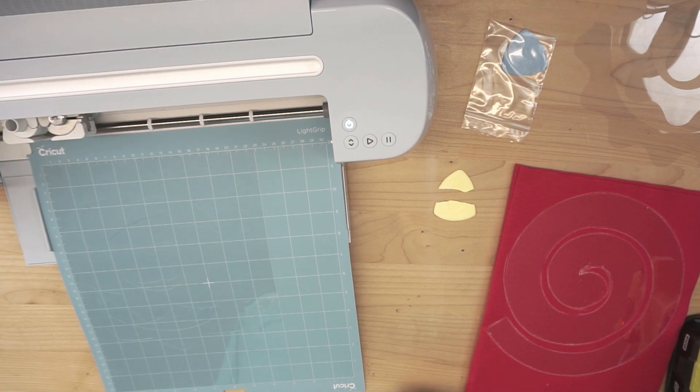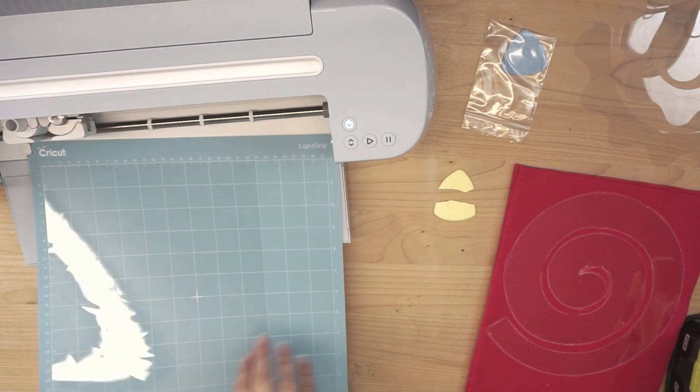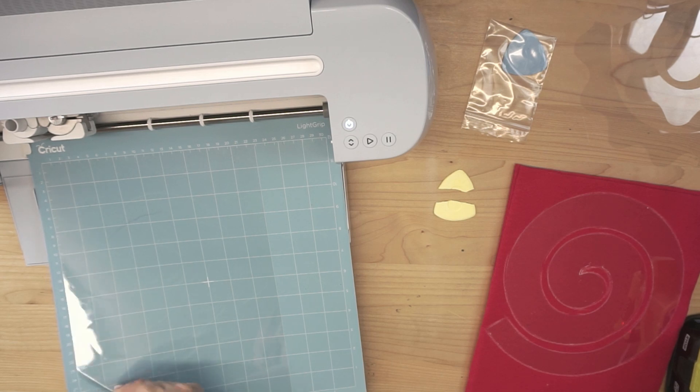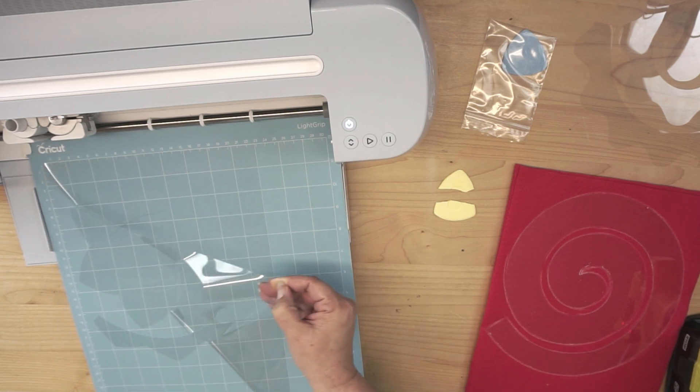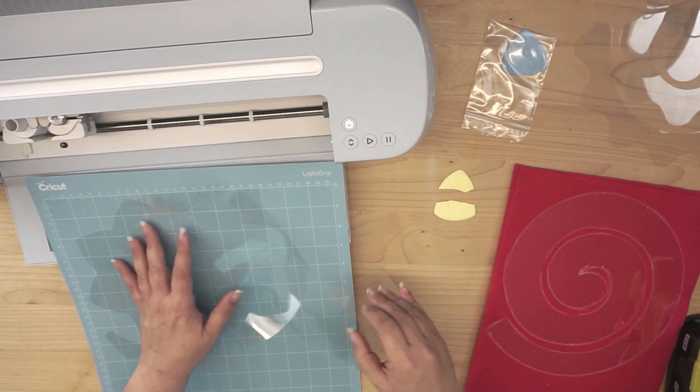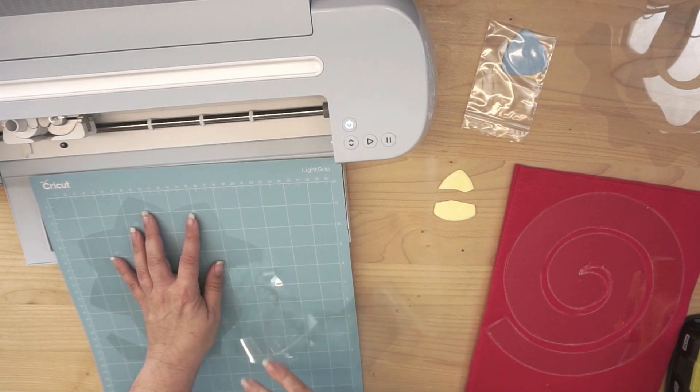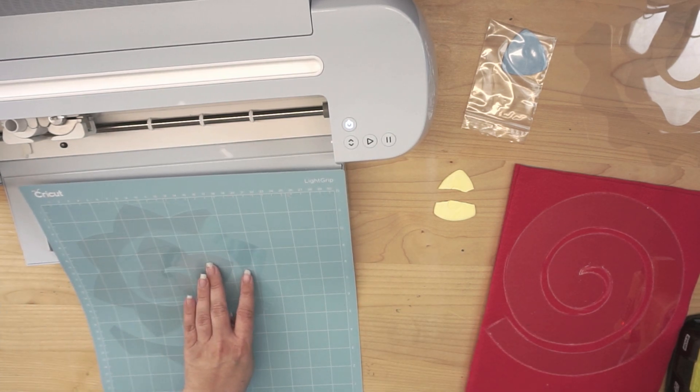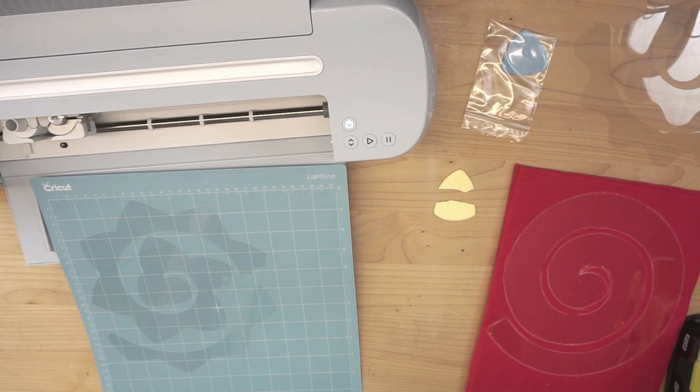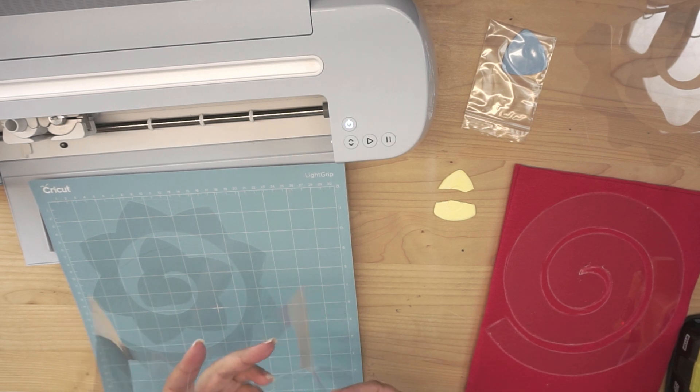So once cutting is complete, I always double check before I unload the mat. But basically, you can just pull back the outside piece, and go ahead and start weaving it off of the cutting mat. Now what you're left with, is actually you end up with two stencils, because both of these will work.